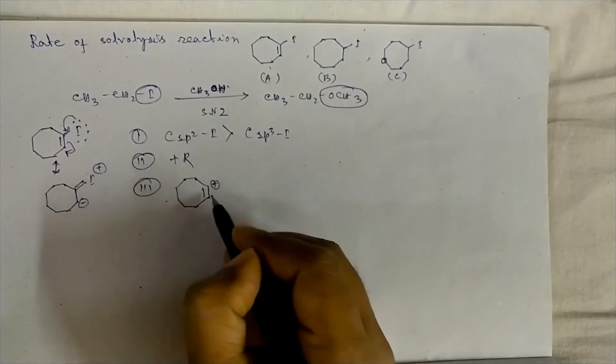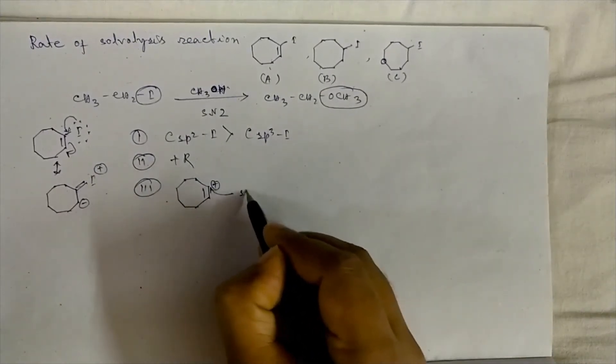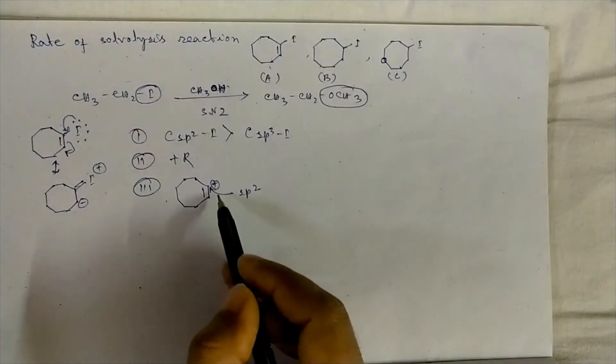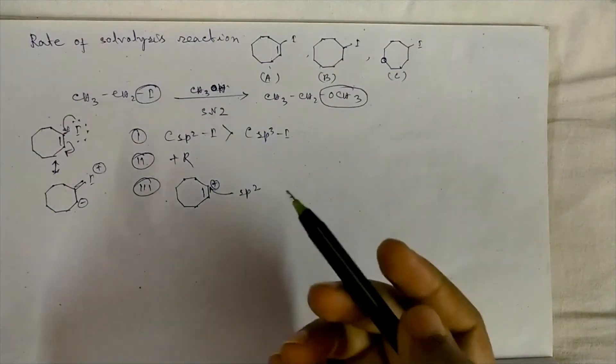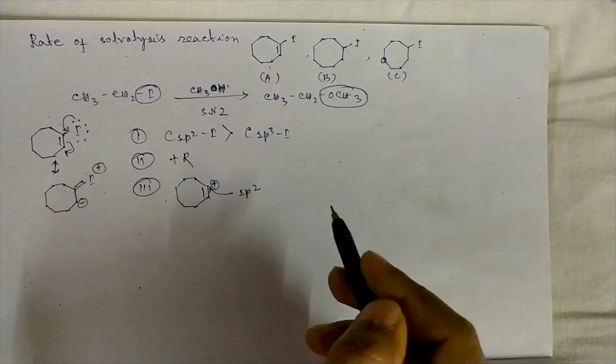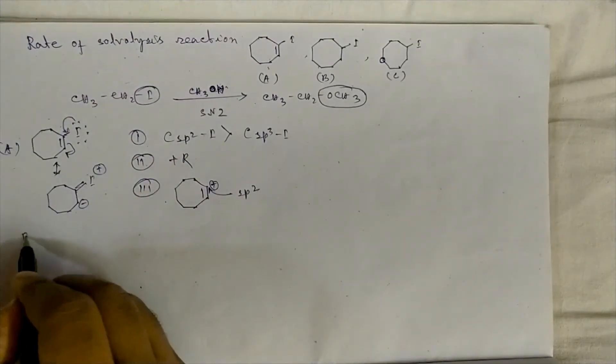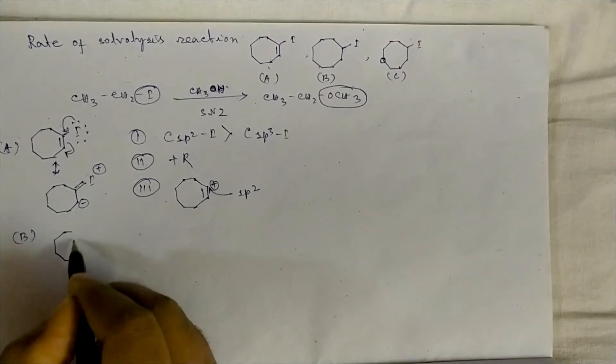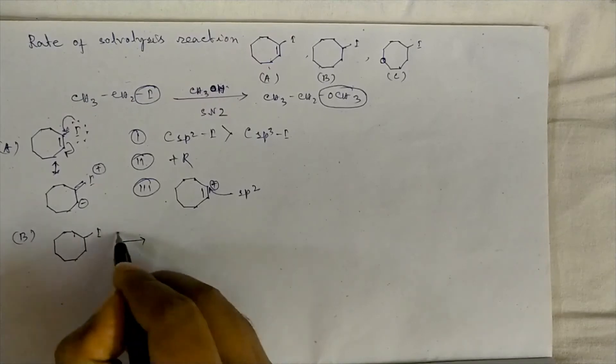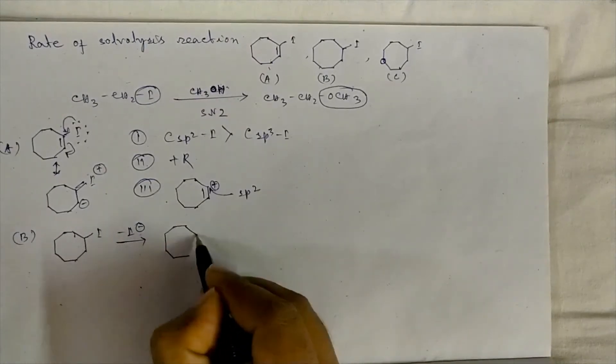has higher electronegativity than sp3 hybridized carbon. In compound B, the departure of iodide will give a 2° carbocation with sp3 hybridization. The four alpha hydrogens with their hyperconjugation effect give some stability to